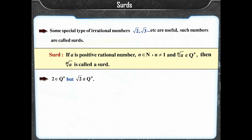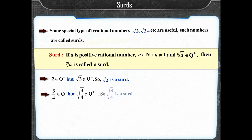Since 2 belongs to Q positive but square root of 2 does not belong to Q positive, square root of 2 is a SIRD. Similarly, 3/4 belongs to Q positive, but square root of 3/4 does not belong to Q positive, so square root of 3/4 is a SIRD.